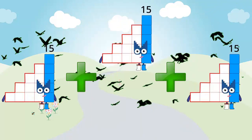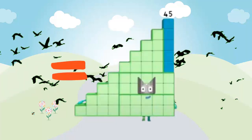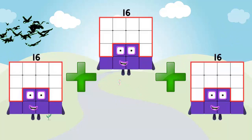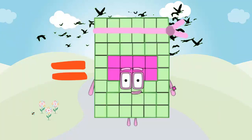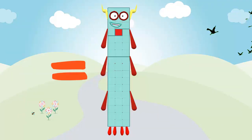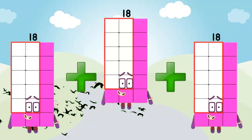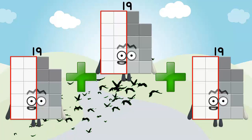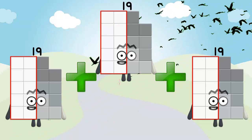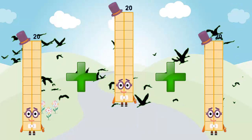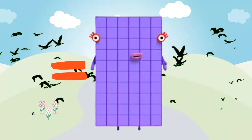15 plus 15 plus 15 equals 45. 16 plus 16 plus 16 equals 40. 17 plus 17 plus 17 equals 51. 18 plus 18 plus 18 equals 54. 19 plus 19 plus 19 equals 57. 20 plus 20 plus 20 equals 60.